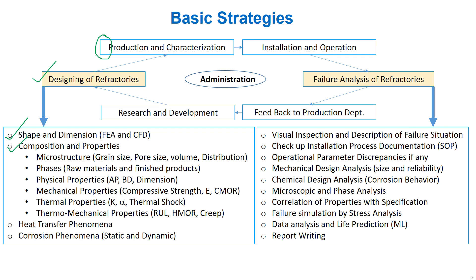Composition and properties can be subdivided into six points. First, microstructure: we have to consider both grain size and pore phases for both raw materials and finished products. Second, physical properties — specifically apparent porosity, bulk density, and TCHD. Third, mechanical properties: compressive strength, elastic modulus, and cold modulus of rupture. Fourth, thermal properties: thermal conductivity, coefficient of thermal expansion, and thermal shock resistance. Fifth, thermomechanical properties: refractoriness under load, hot modulus of rupture, and creep.